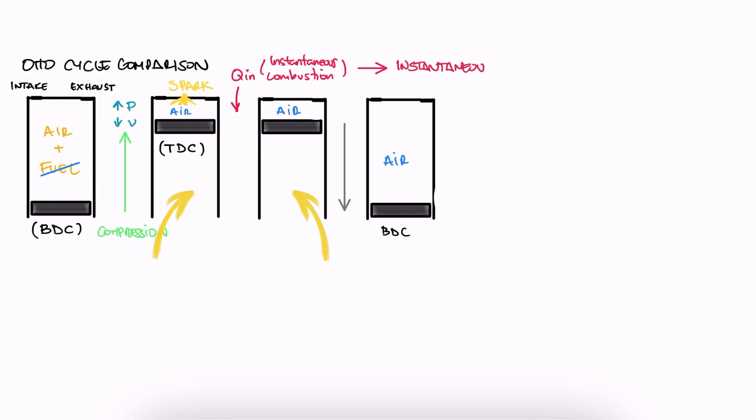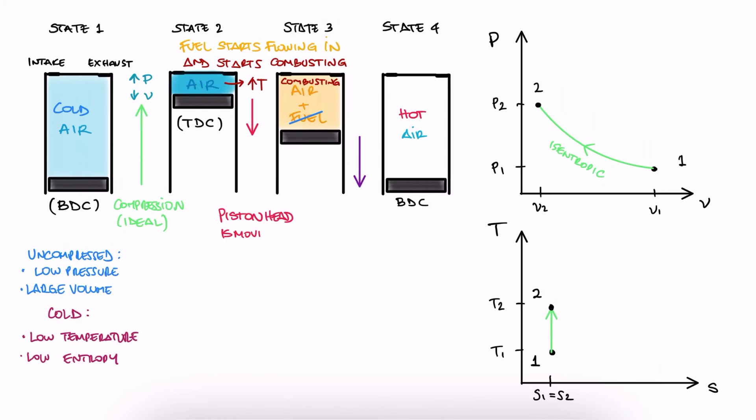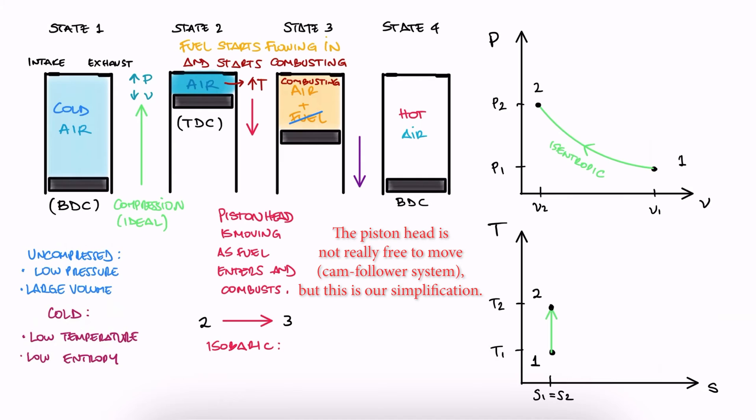Now, from 2 to 3 we used to add a spark that made the mixture combust in an instant. Because of that, we made the assumption of an isochoric heat addition process. We assumed that the mixture was combusting before the volume had a chance to change. But in this case, we are injecting the fuel, and the piston head is already moving as more fuel is coming in. And what do we usually have in a piston cylinder system where the piston's head is allowed to move freely?